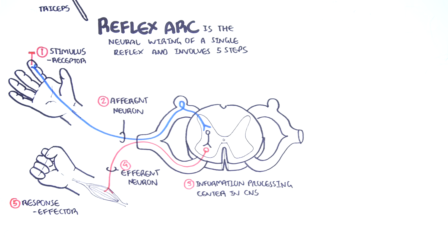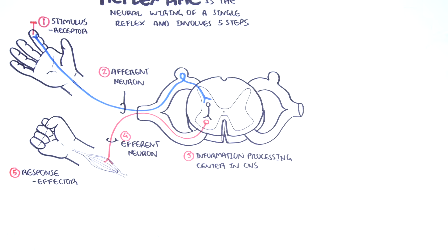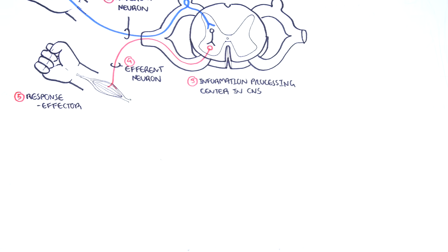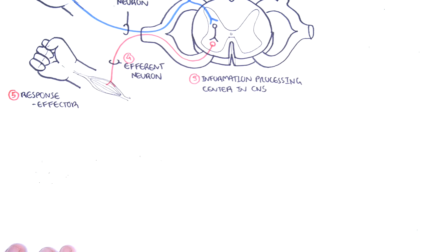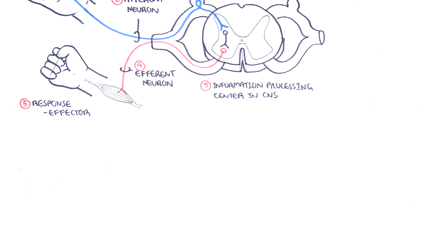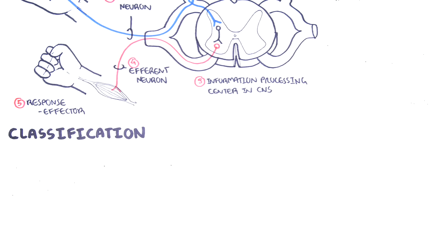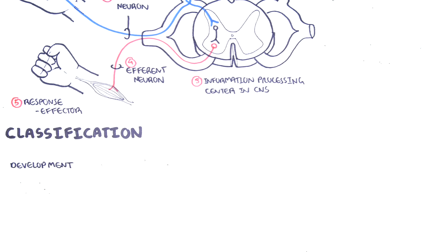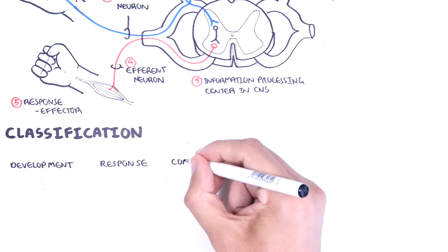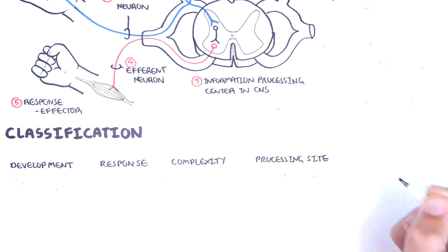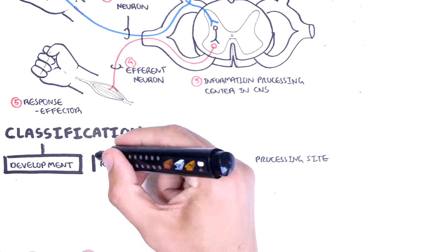In this case, it is the muscle of the flexors of the hand, causing the hand to make a fist, to withdraw from the stimulus. Reflexes are classified according to development, response, complexity, and processing side.